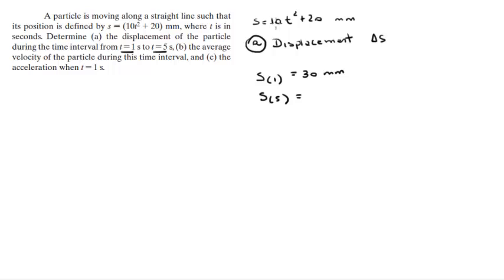5 times 5 is 25, times 10 is 250, plus 20 is 270 millimeters. So the displacement is simply the difference between these two, which comes out to be 240 millimeters.